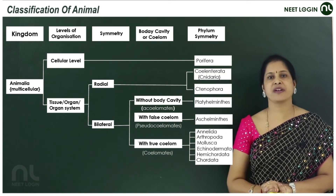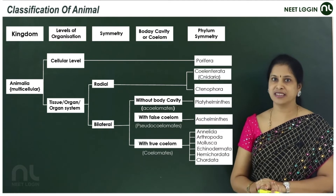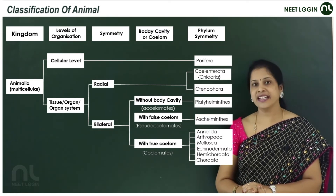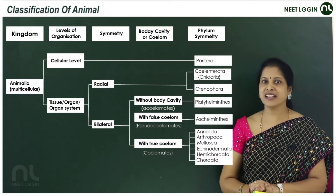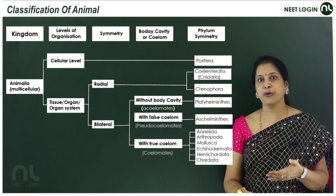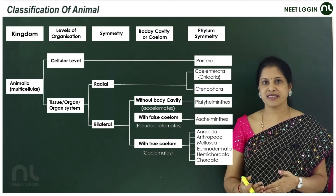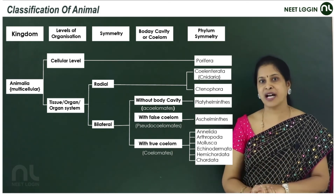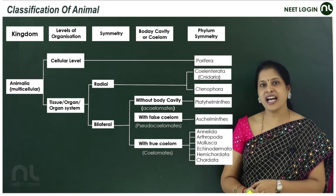Tissue level of organization is seen in diploblastic animals with radial symmetry. They don't have a coelom, since coelom is seen in triploblastic animals. So tissue level of organization, diploblastic organisms with radial symmetry and acoelomate — this belongs to the phyla Cnidaria and Ctenophora.